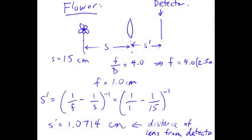So first I draw the diagram for the thin lens equation when considering the flower. S is the object distance between the flower and the lens, which is 15 centimeters in this problem. S prime is the image distance from the lens to the detector — if the image is formed on the detector you get a well-focused image. Using the equation F over D equals 4.0 and solving for F, we get F equals 1.0 centimeter, or 10 millimeters.